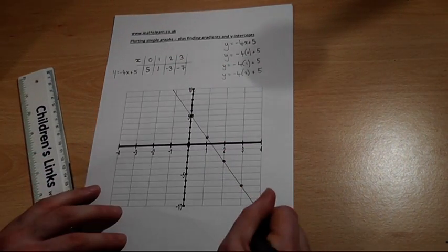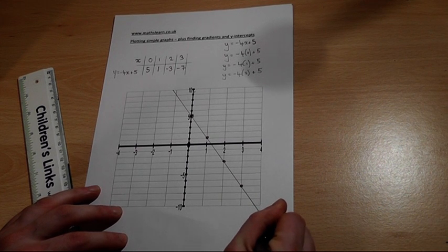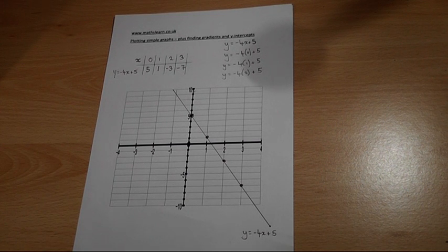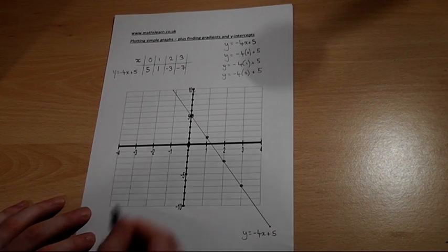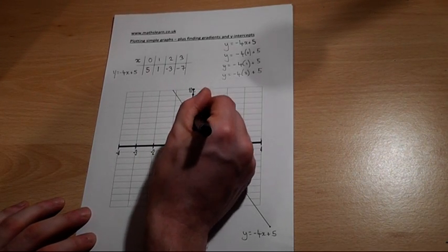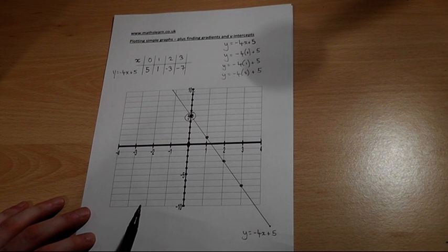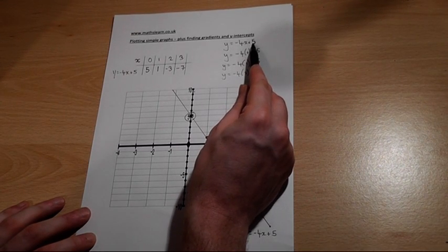And that is the line y equals minus 4x plus 5. Couple of observations again. This value here is called the y-intercept. It is always given by the number we add or subtract in the equation.